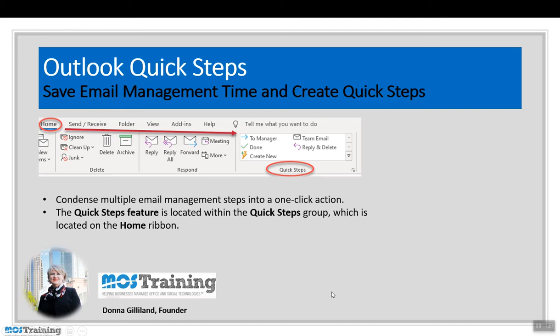Microsoft Outlook Quick Steps. Use them to condense multiple email management steps into a one-click action. The Quick Steps feature is located within the Quick Steps group on the Home ribbon in your Outlook program. Let's get started teaching you how to use this very time-saving feature — it's an often overlooked feature by many.